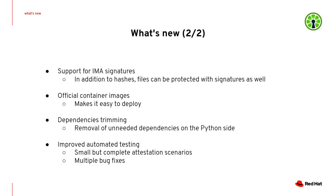QLIME now supports IMA signatures, which means that in addition to hashes, files can be protected with signatures as well. The project also publishes official container images, which make it very easy to try out. Simply spin up a container, and you can get started.